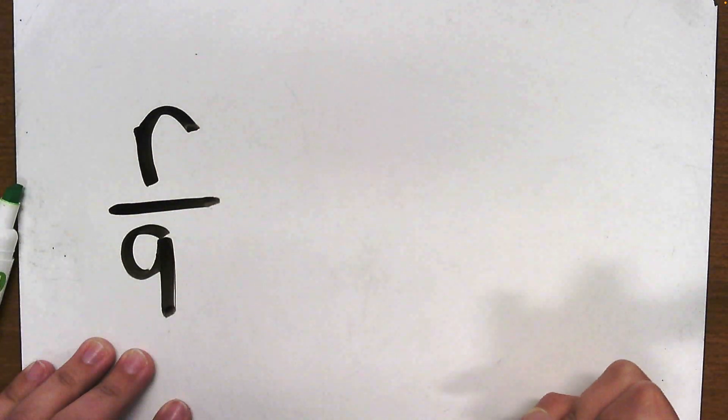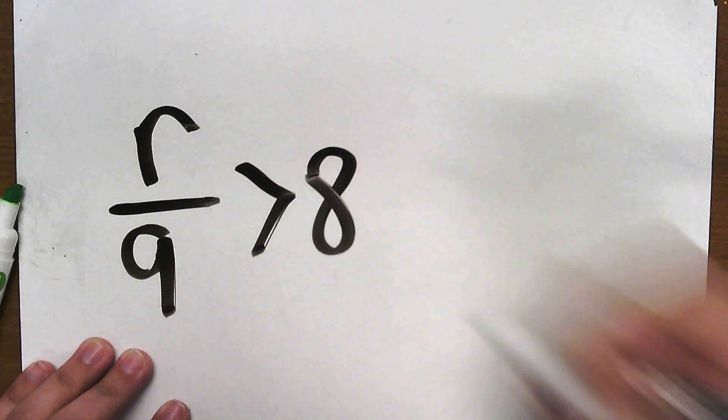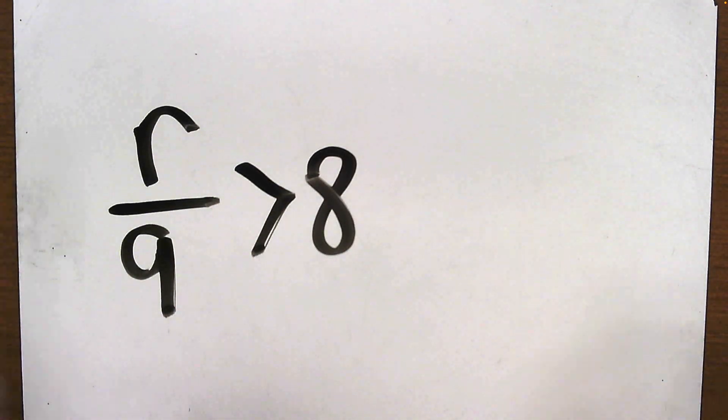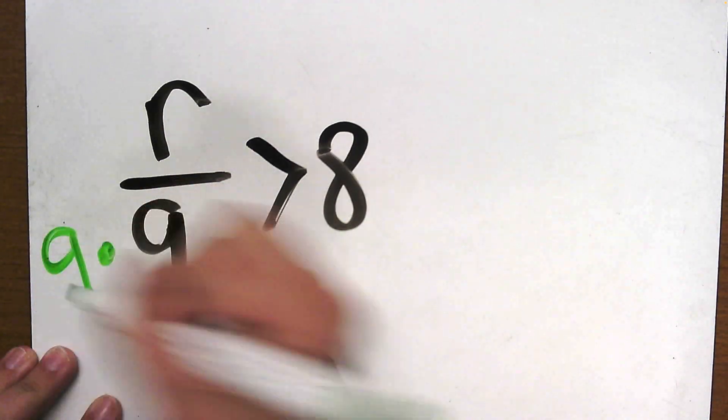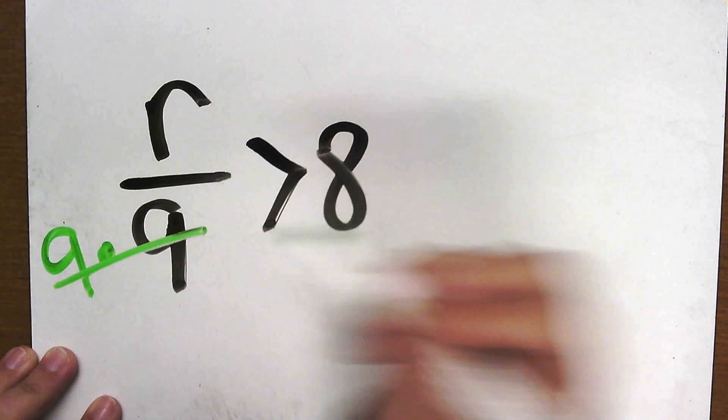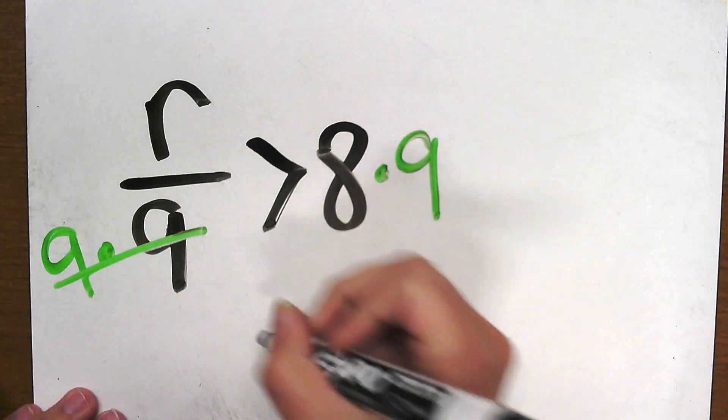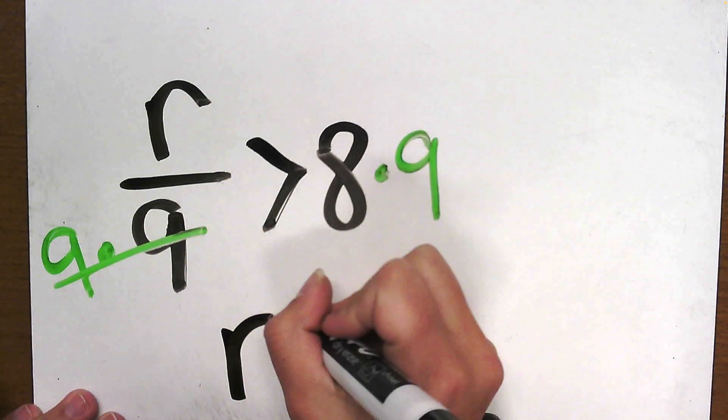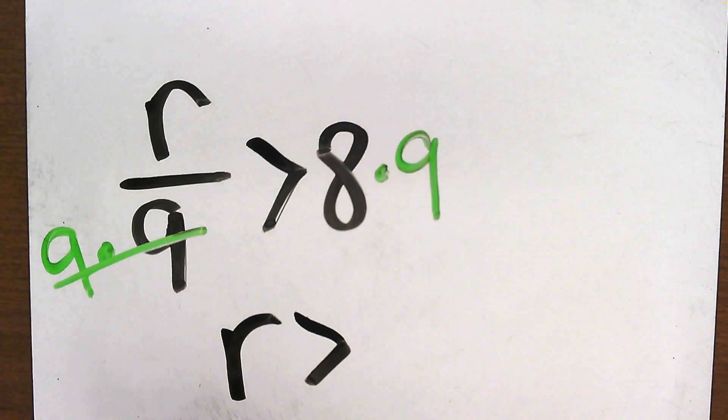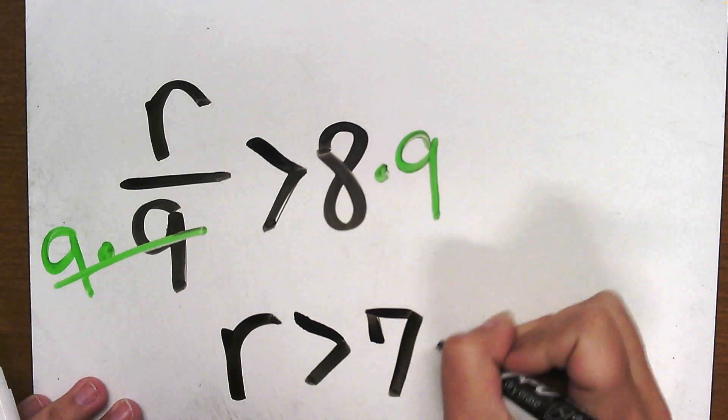If I have r over 9 is greater than 8, this looks like a fraction, but really, it's just division. So I'm going to go ahead and multiply by 9. And what I do to one side, I must do to the other. Now I have r, same symbol, but I need my new number. 8 times 9, that is 72.